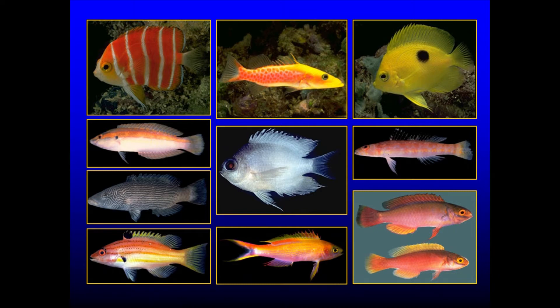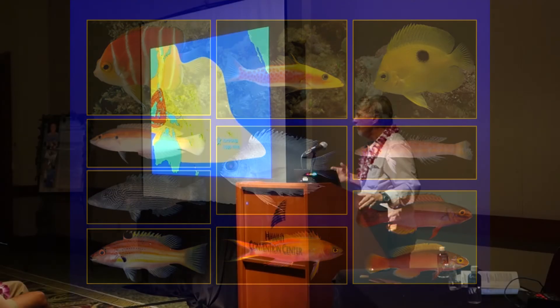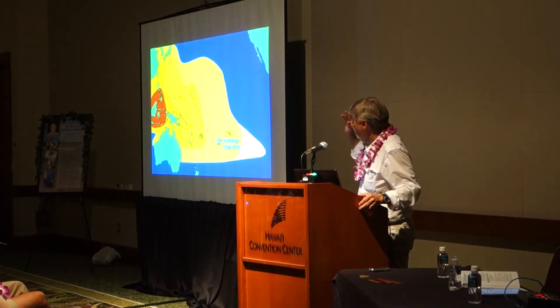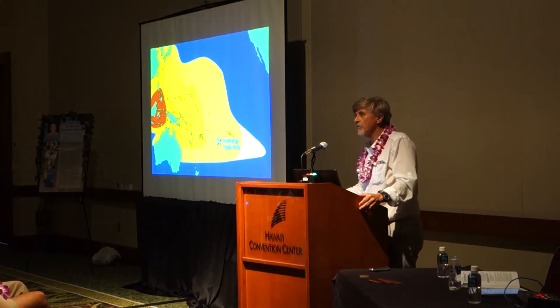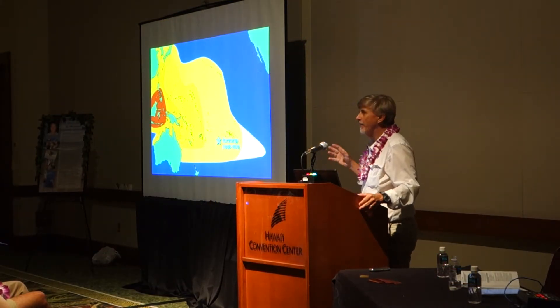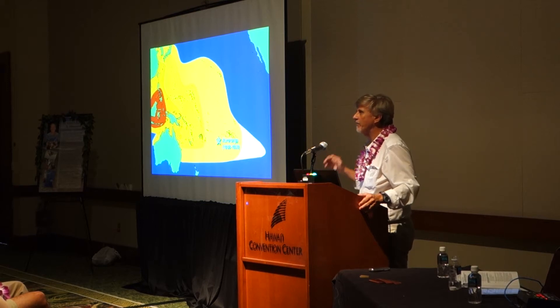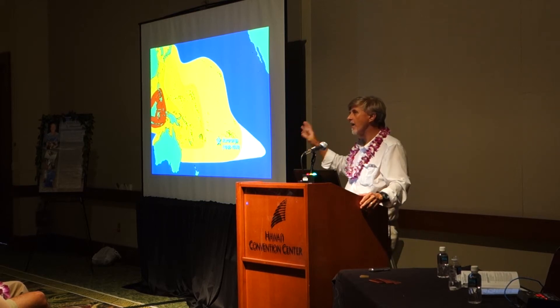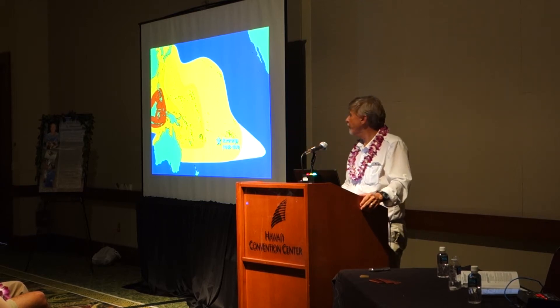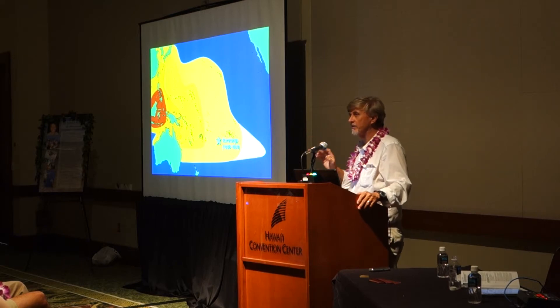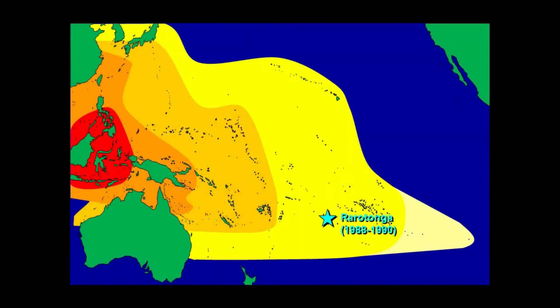More than just new species, we found very rich and complex environments down there. We had assumed it would be pretty barren and deserted, but it was very robust. What was amazing to us at the time was that the diversity in the coral triangle is four to five times as high as in Rarotonga. So if we could go to the western Pacific and do some deep diving, we expected to find way more new species.